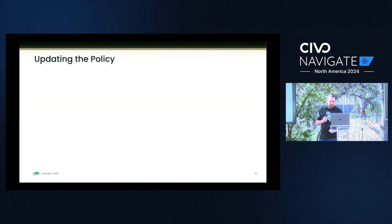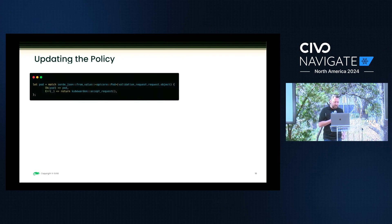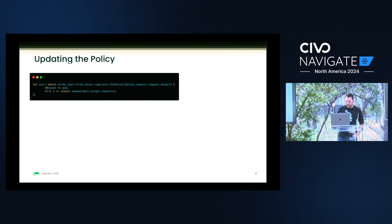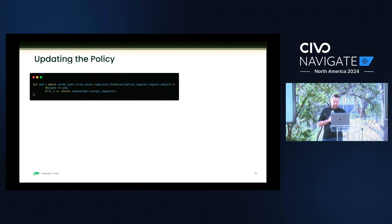Looking at the policy itself, we need to match and pull out the object it's looking for. We're calling it a pod — terrible at naming — but we pull that particular validation request from Kubewarden. When it comes in, we can either get the pod, or if we don't find that particular object, we throw an error.